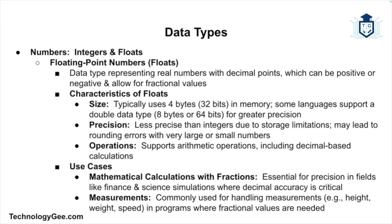Next, let's discuss floating point numbers or simply floats. A float is the data type used to represent real numbers that contain decimal points. These numbers can be positive or negative and they allow for fractions of a whole number. A float typically uses four bytes of memory or 32 bits. Some languages also support a double data type, which uses eight bytes or 64 bits for more precision. Floats are less precise than integers due to the way they are stored in memory, which can lead to rounding errors in very large or very small numbers.